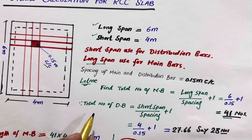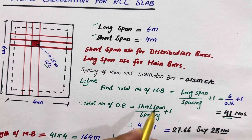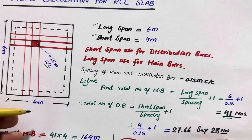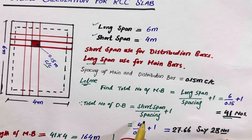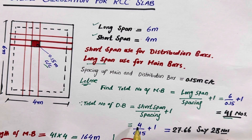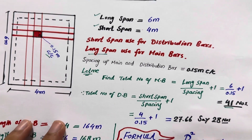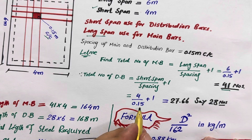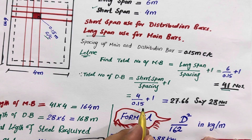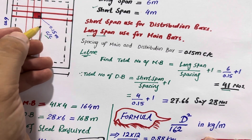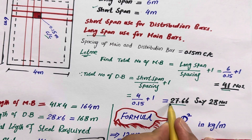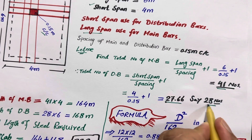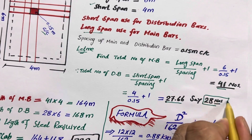Now let me find the total number of distribution bars. For distribution bars we use the shorter span. Shorter span divided by spacing plus one: four meter divided by 0.15 meter, plus one. We get 27.66, so we say 28 steel rods are required for distribution bars.